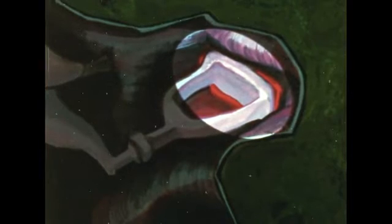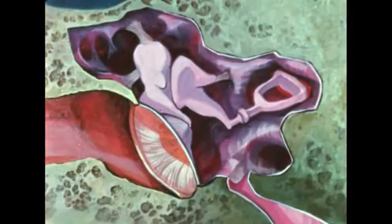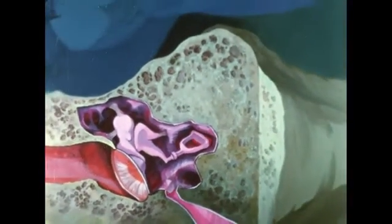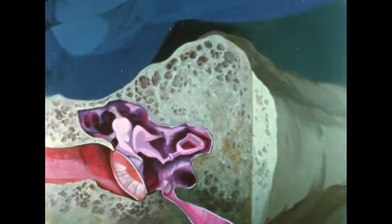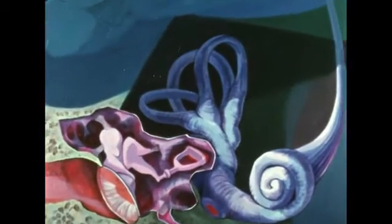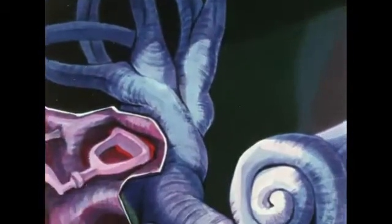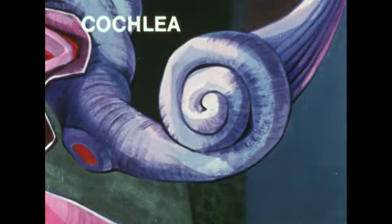This opening — the oval window — is the entrance to the inner ear. Because the oval window is much smaller than the eardrum which activates the chain of bones, sound waves are amplified some 30 times as they are conducted into the inner ear. Beyond the oval window, enclosed within the hardest bones of the skull, lies the inner ear. This organ is made up of small fluid-filled structures. The uppermost is the vestibular apparatus, concerned with the sense of balance; below it, the cochlea, concerned with the sense of hearing.